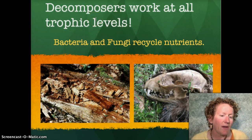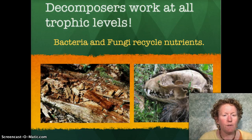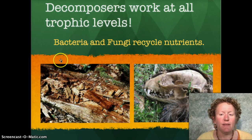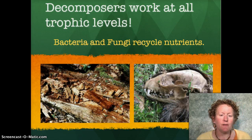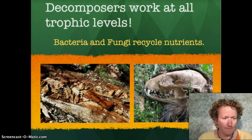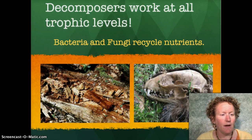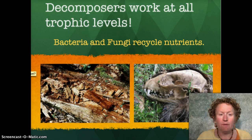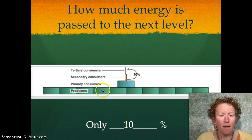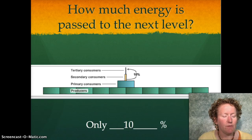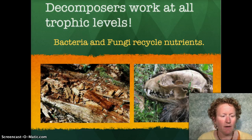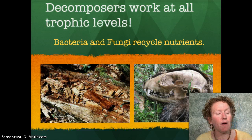Decomposers work at all trophic levels. Decomposers break down dead stuff — bacteria and fungi recycle nutrients. Dead trees, dead animals, other dead plants, even dead bacteria and fungi get recycled by their own kingdoms. So anything that dies on any level gets recycled by the detritivores. They help keep dead stuff from piling up all over the earth.